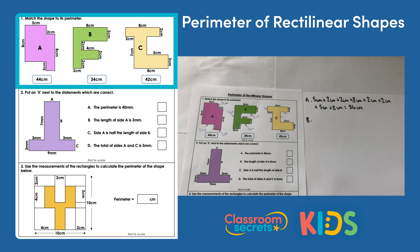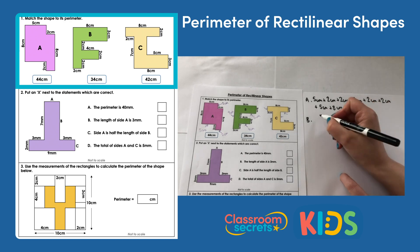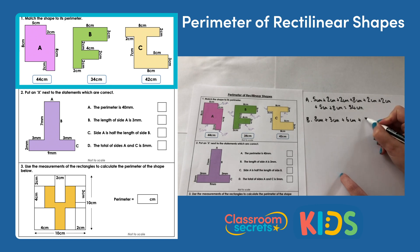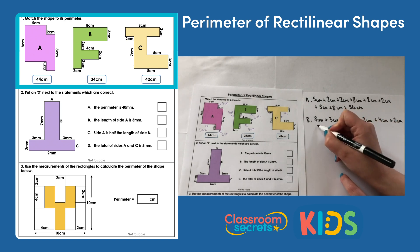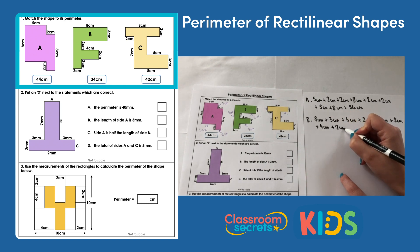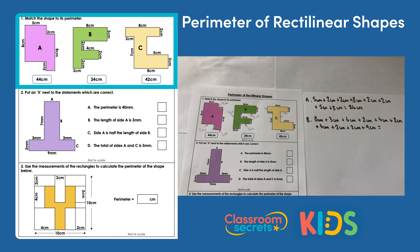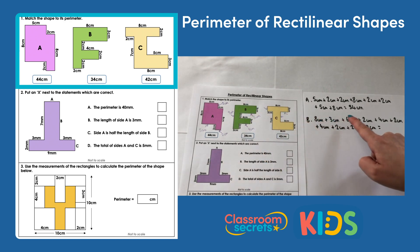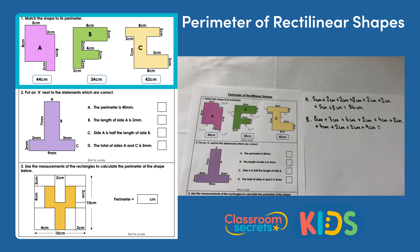My next step is to add all those lengths together, starting at the top and working my way around: 8 centimetres, add 3, add 6, add 2, add 4, add 2, add 4, add 2, add 2, and finally 9 centimetres. It's worth counting each side to check you haven't repeated or missed any. The perimeter of shape B is 42 centimetres — again one of the values on the sheet.